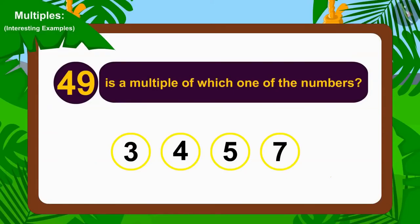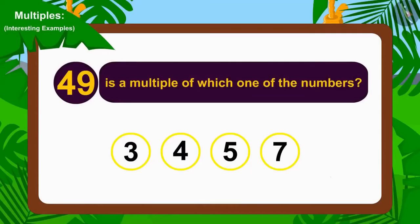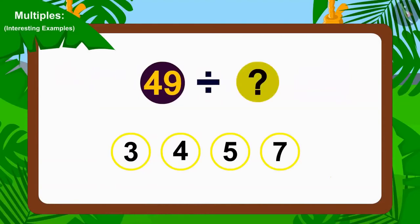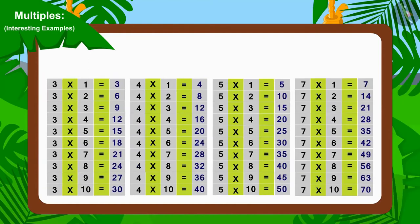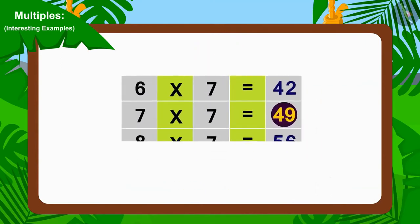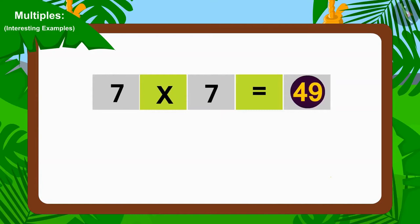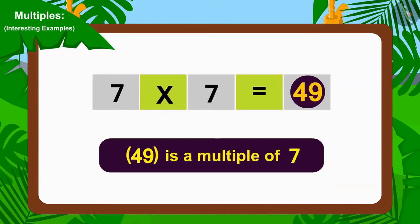Now can you tell 49 is a multiple of which of these numbers? If you want, you can stop the video and find the answer. Well done children! To find which number 49 is a multiple of, we only have to see which number it can be divided by. If we look at the multiplication tables of 3, 4, 5 and 7, we will find that the number 49 can be found in the multiplication table of 7 only. So, we can say that 49 is a multiple of 7.